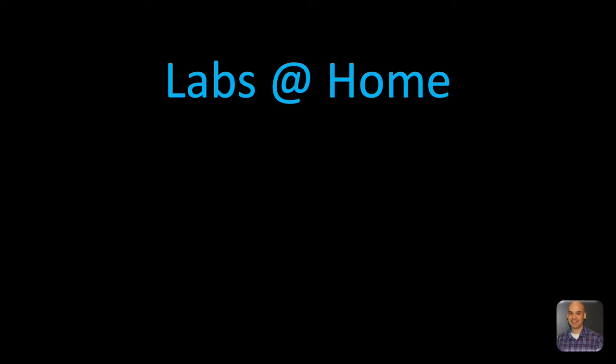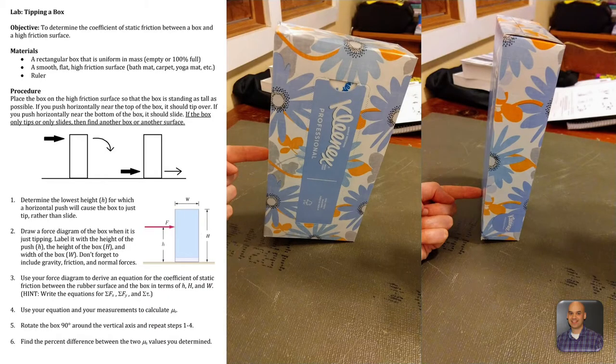So labs at home. This is the tipping the box lab. I've done this lab with my AP Physics C mechanics students, and it's a really simple lab where they find the coefficient of friction between a box and a grippy surface. And all they need is a ruler. So what they would do is they would find a box and a grippy surface could be rubber like a yoga mat or maybe a bathroom carpet or something like that. And they put the box on top as tall as it can be, and they push on the box at the bottom.